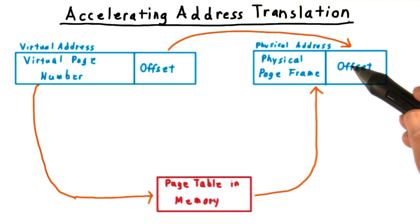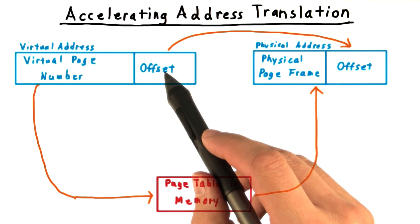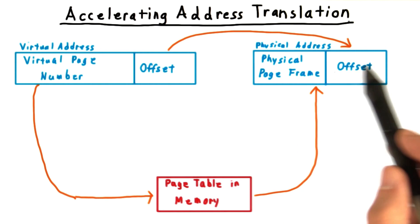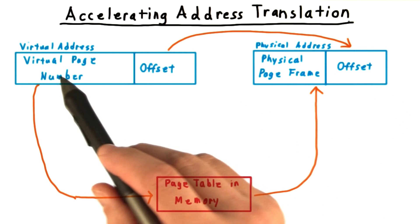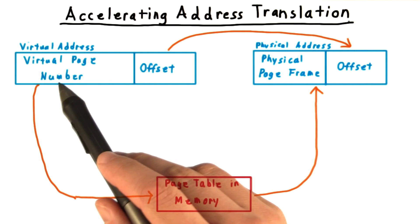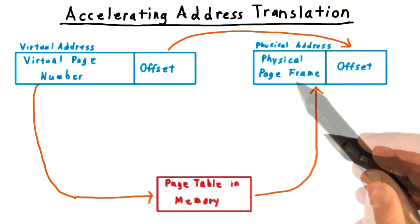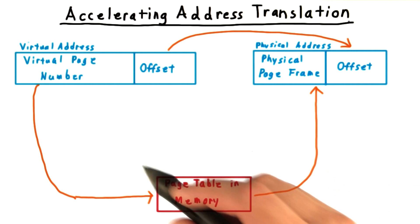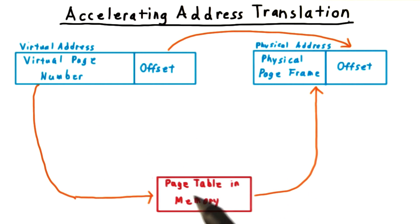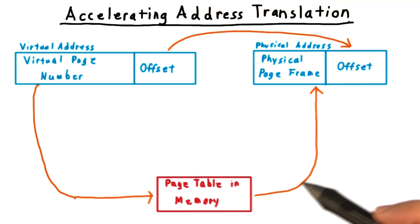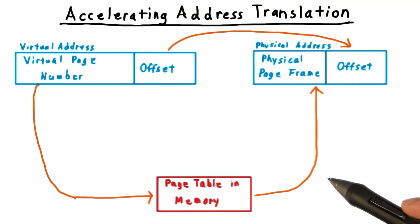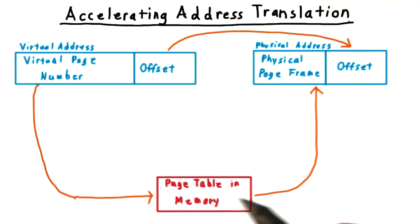So far, we've described the address translation process like this. The offset from the virtual address simply gets copied to the physical address. And in order to translate the virtual page number, we do a lookup in the page table, which is in memory, to find the physical page frame. Now you may be asking yourself: won't going to memory for the page table every time we access a memory address be slow? In fact, we'll have to go multiple times for a hierarchical page table.